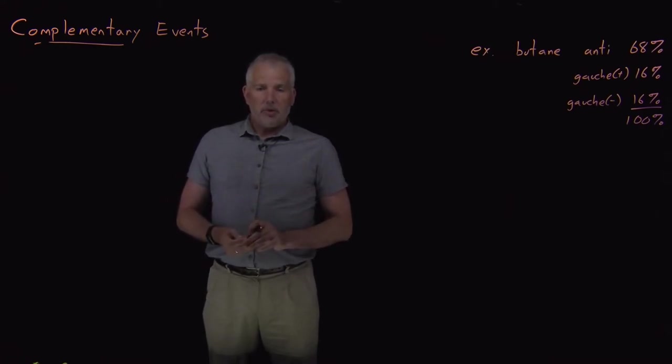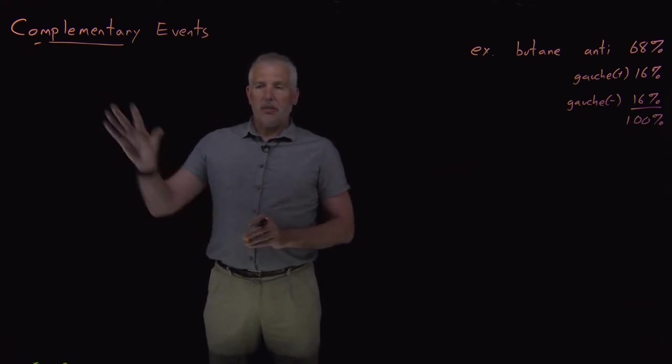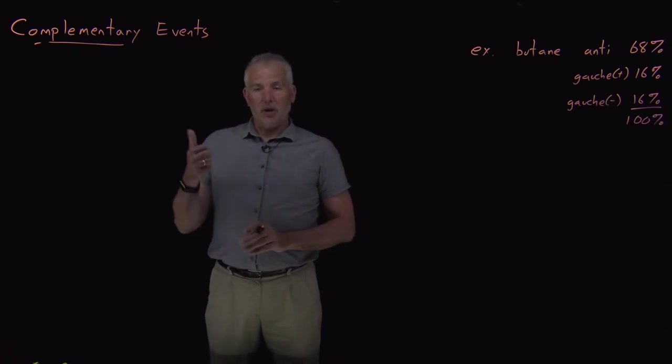As a more chemistry-related example, an electron can have spin up or it can have spin down, but those are the only two possibilities. Heads and tails for a coin or spin up, spin down for an electron are complementary events, because if we know one of them happens, the other one is the only other option.